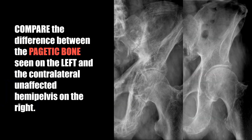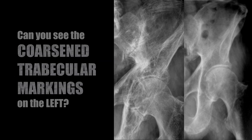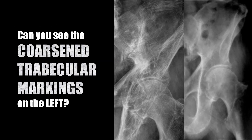Compare the difference between the pagetic bone seen on the left and the contralateral unaffected hemipelvis on the right. You should be able to see a difference — look at the coarsened thick trabecular markings on the left.